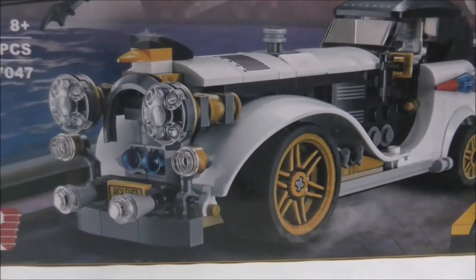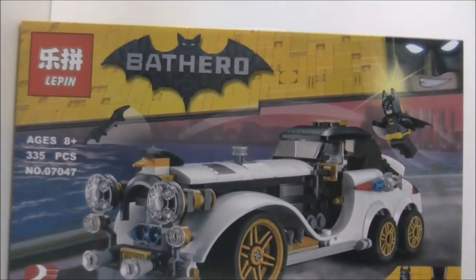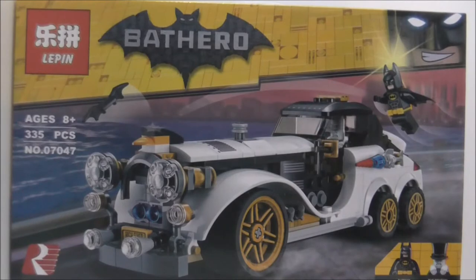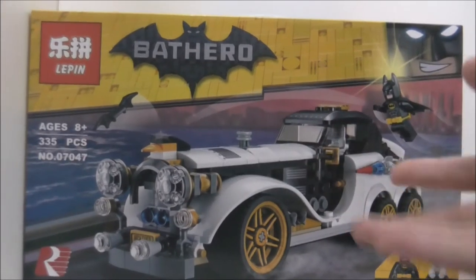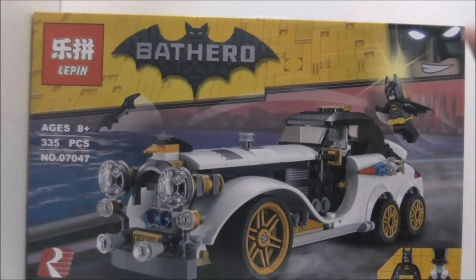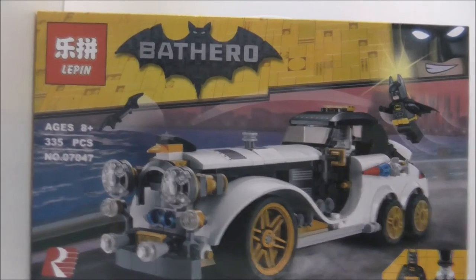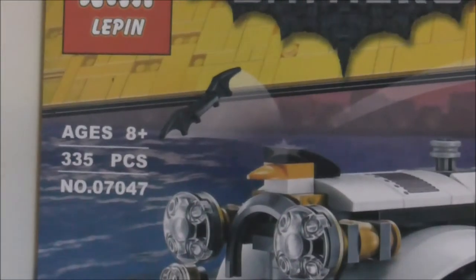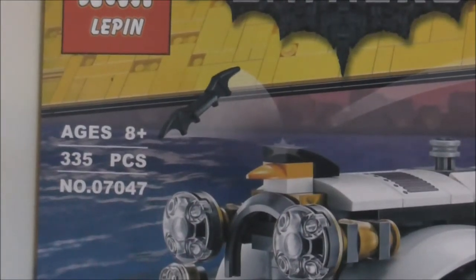Hey guys, this is your S2 and today I review the Lepin Lego Batman Movie The Penguin Arctic Roller Set. This is the box here. It's pretty big for a 300 piece set because Lepin made the box size much bigger than the original one. It's recommended for ages 8 and up, comes with 335 pieces and it's set 07047.